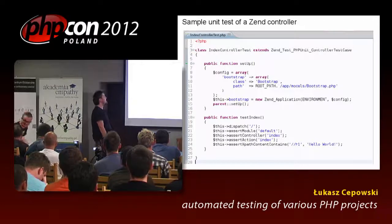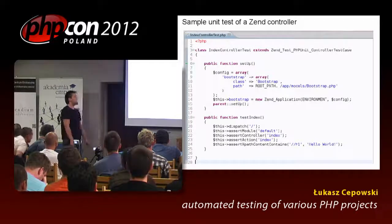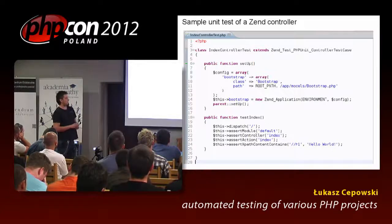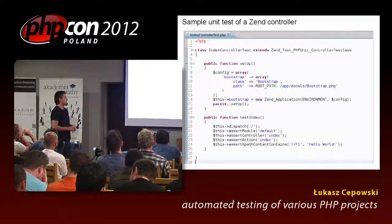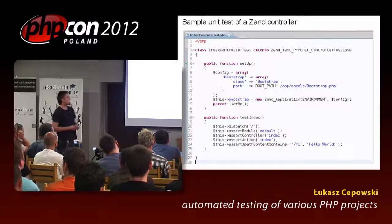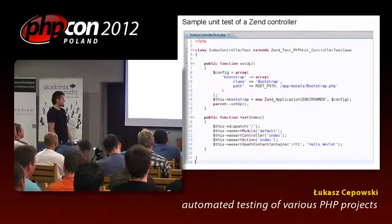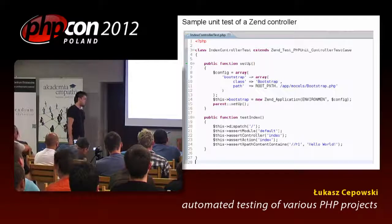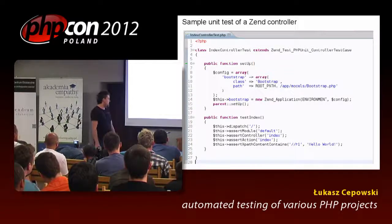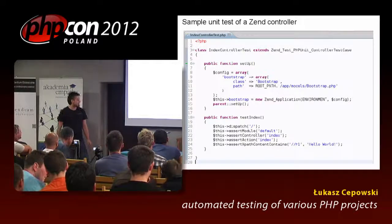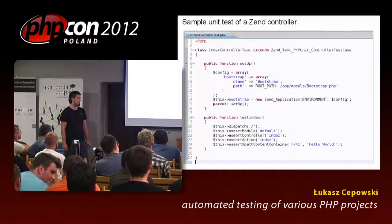This is a unit test of ZendController in a slightly different way from what you saw on the previous presentation. The key difference is that I'm creating an application for each run of tests — I will explain later why I think this is a little bit better. This is a simple test that asserts if the index controller has actually been executed, and it also uses XPathContentContains.